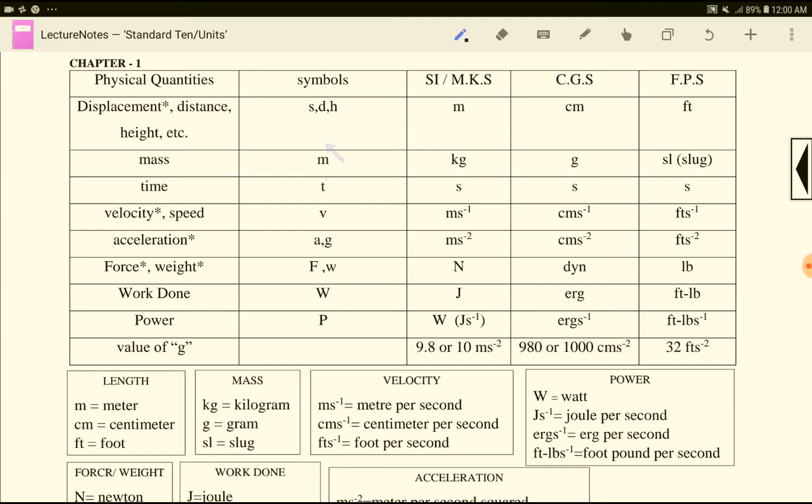Now work done. Work done units are: MKS system is Joule, CGS system is erg, FPS system is foot-pound. Now power. Power units are: MKS system is Watt or Joule per second, CGS system is erg per second, FPS system is foot-pound per second.